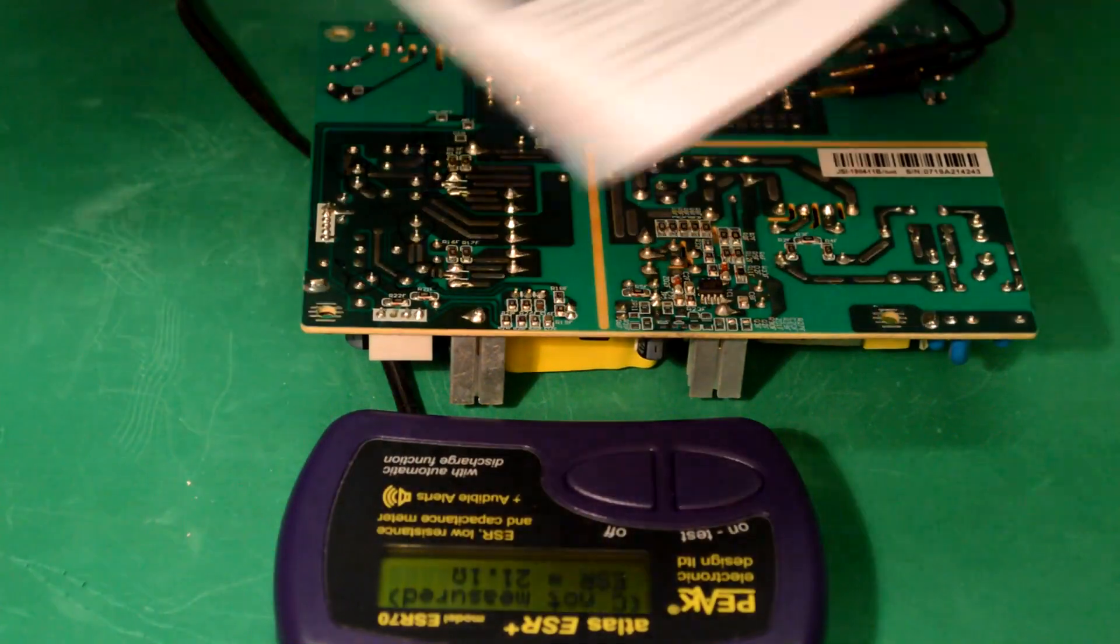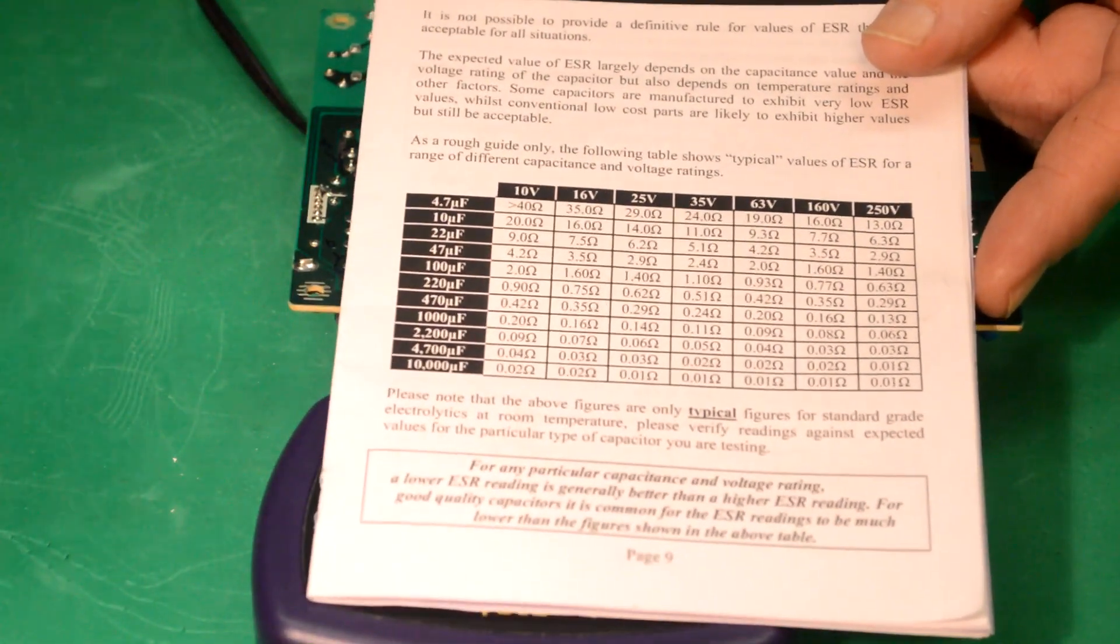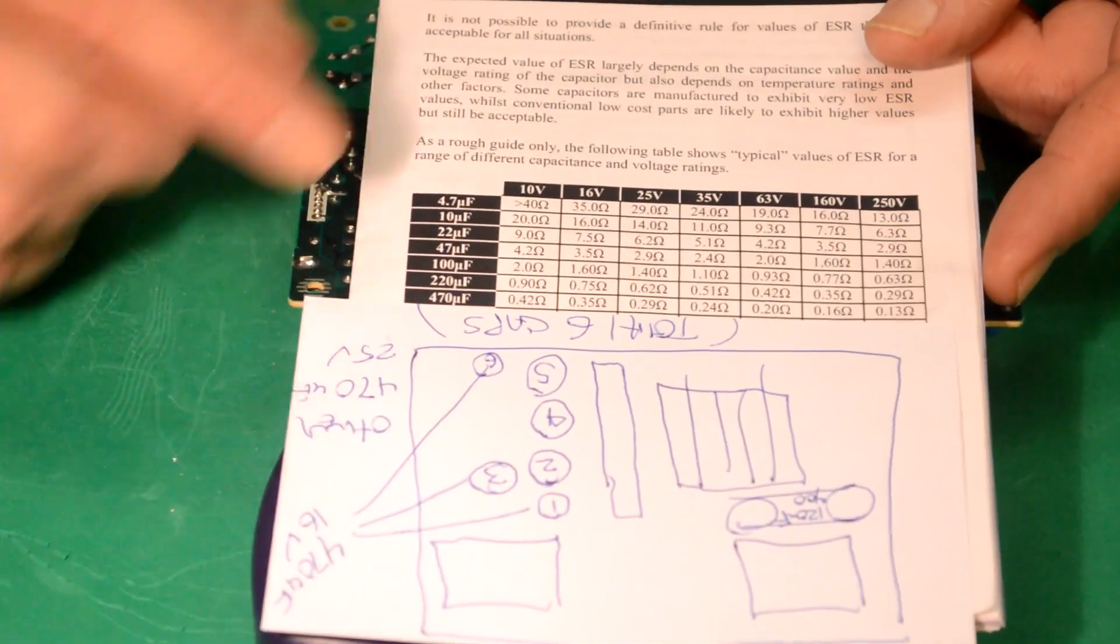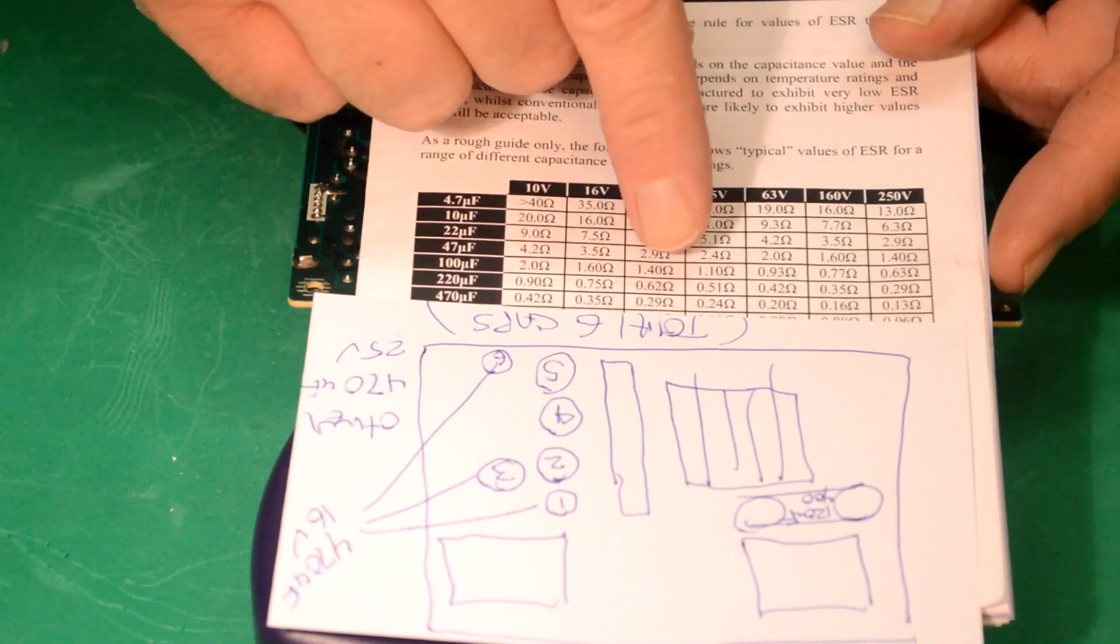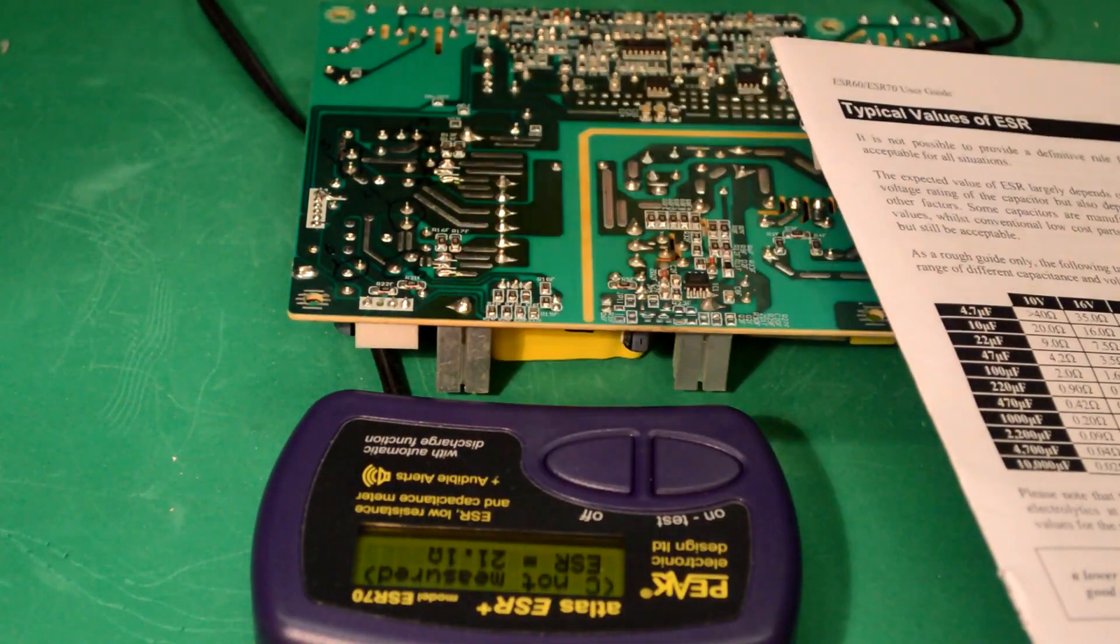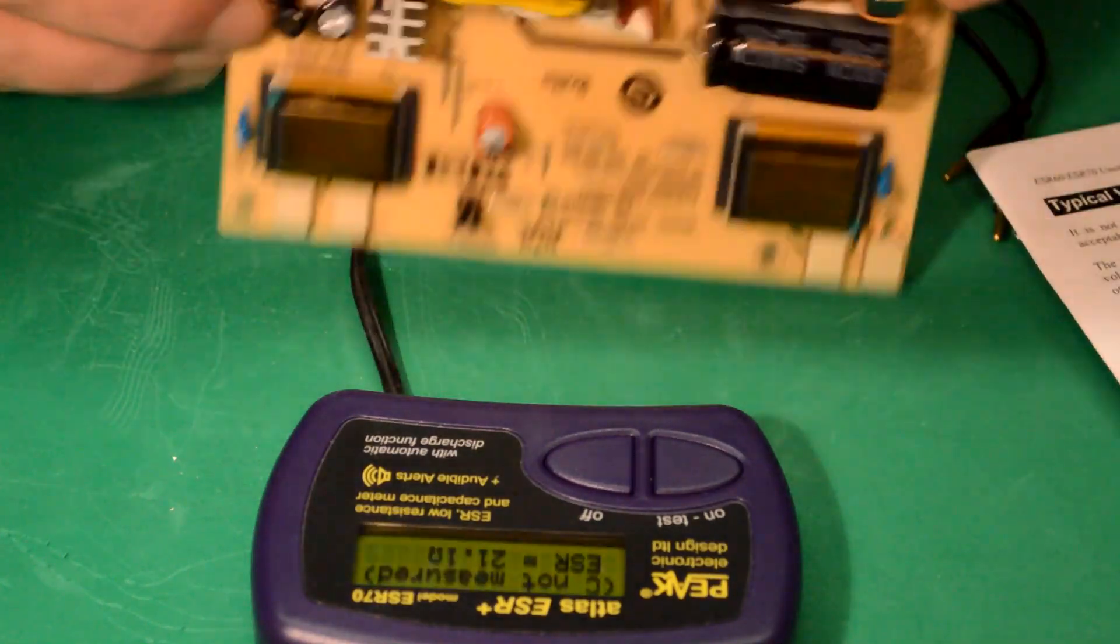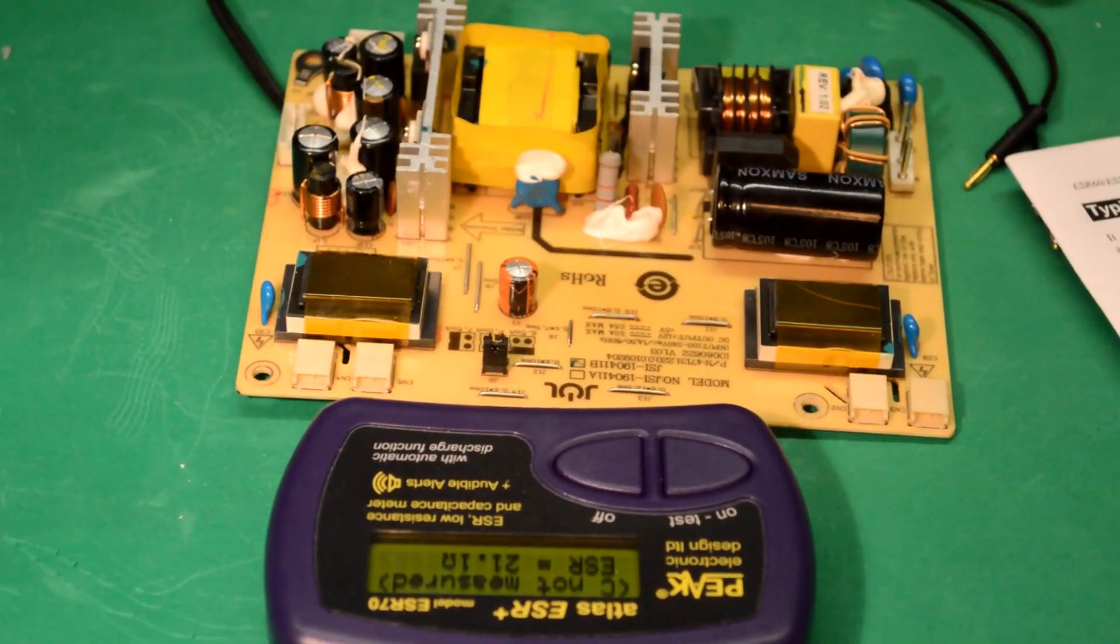And you can use this book and find, you know, what you're looking for. Here's 470, 25 volt. So we should be 0.29. And we just got 21 ohms. So anyway, that was a pretty obvious one because it was bulged out, but I just wanted to show you how to use the ESR meter.